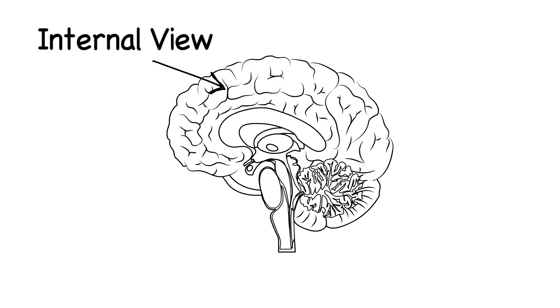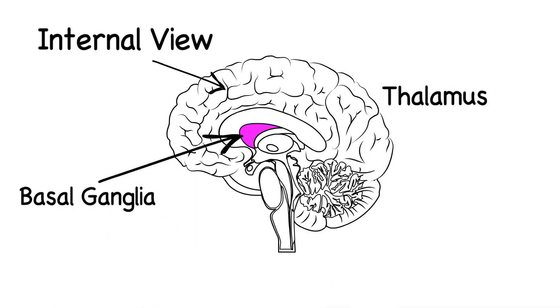Important to point out here are the basal ganglia, a group of structures located here, and the thalamus, a small structure located here just above the brain stem.